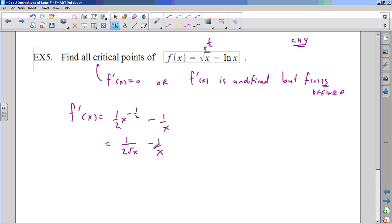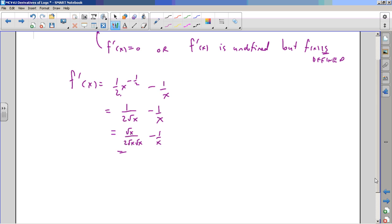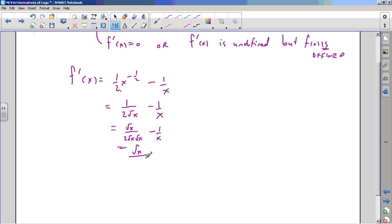And I suppose we could try and get a common denominator here. Notice if I multiply this thing by root x over root x, it'll clean it up a little bit. 2 root x times root x. And then I got root x over 2x minus 1 over x. Now it's easy to see what the common denominator will be. Multiply this one by 2, and I got root x minus 2 over 2x. And that's the derivative.